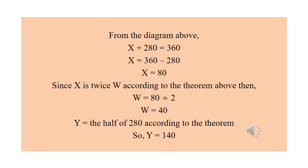To summarize the solution: x plus 280 equals 360, so x equals 80°. Since x is twice w according to the theorem, w equals 80 divided by 2, which is 40°. And since 280 is twice y, y equals 280 divided by 2, which is 140°.